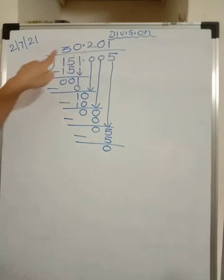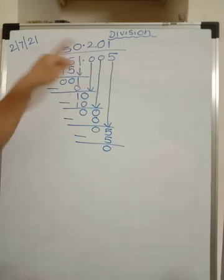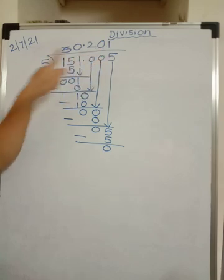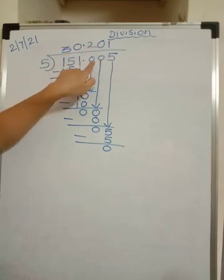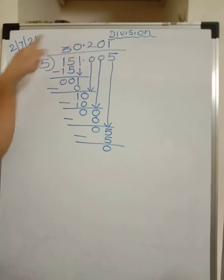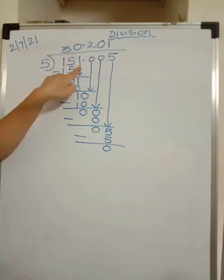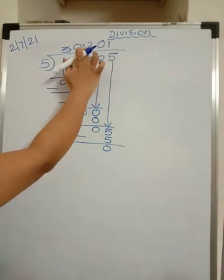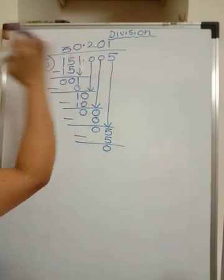Now you multiply this and check if you get this answer. See, 5 ones are 5, 5 zeros are 0, 5 twos are 10, so 0 here carry over 1, 5 zeros are 0, 1 over here, 5 threes are 15. After 3 numbers point is there, so after 3 numbers you get point.